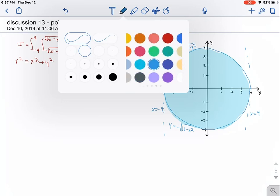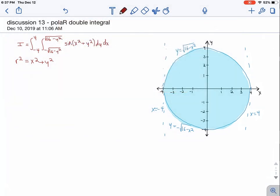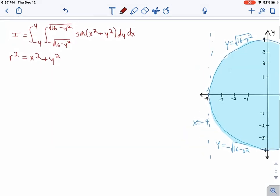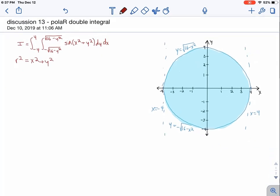To start, we'll convert this integral to polar coordinates. The bounds on r are going to be 0 to 4 since the disk has radius 4. And the bounds on theta are 0 to 2 pi since it's the whole rotation around the entire circle.